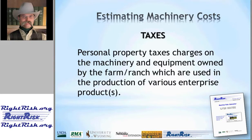Let's start with taxes as the first cost item within the fixed cost grouping. These are personal property taxes charged on machinery and equipment owned by a farm or ranch and used in production activities. Typically, taxes are estimated as a percentage of the purchase price or current value, depending on the state and county basis for assessing those taxes.